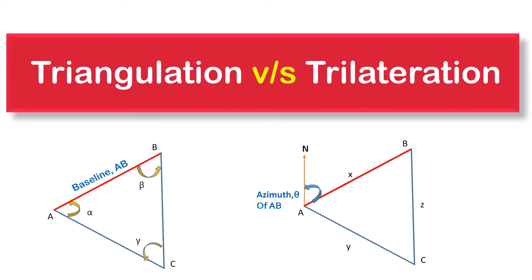Difference between triangulation and trilateration in surveying. Triangulation and trilateration are two methods used to conduct land surveying by determining horizontal measurements.